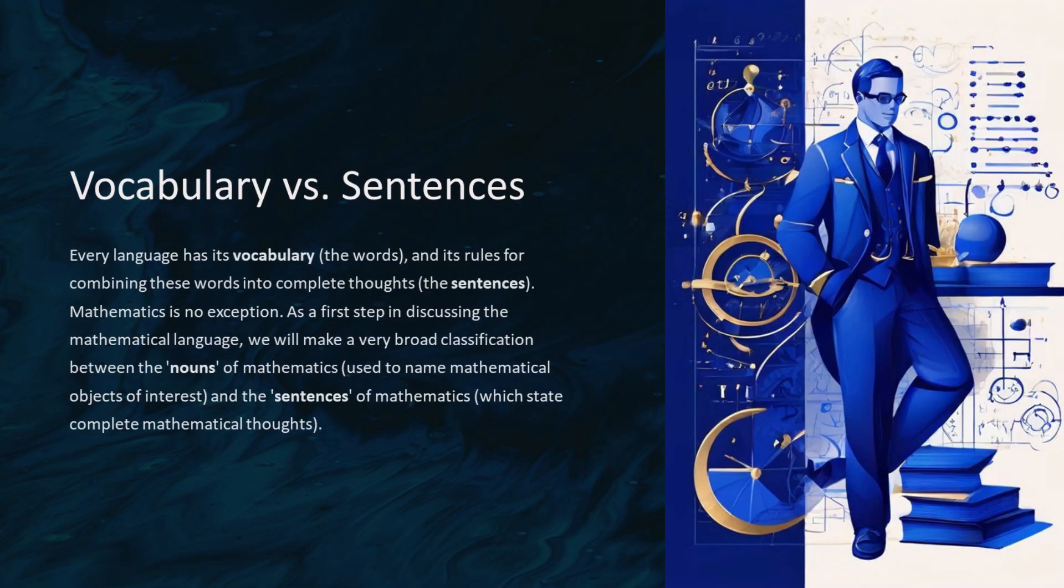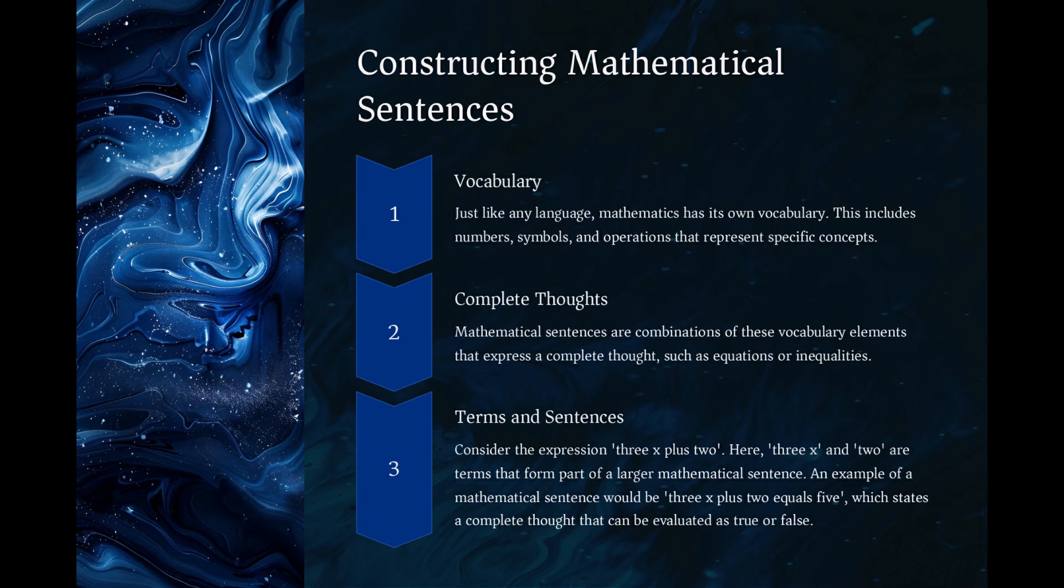Just like any language, mathematics has its own vocabulary. This includes numbers, symbols, and operations that represent specific concepts. Mathematical sentences are combinations of these vocabulary elements that express a complete thought, such as equations or inequalities.